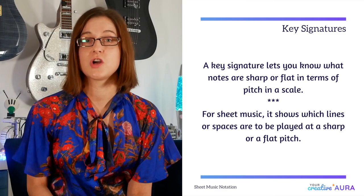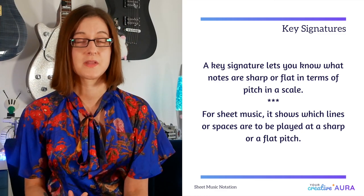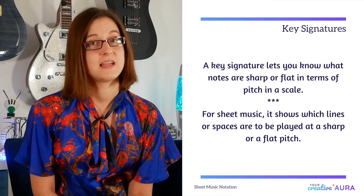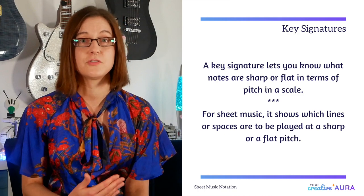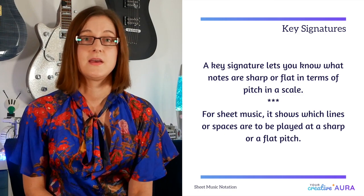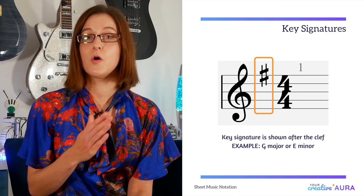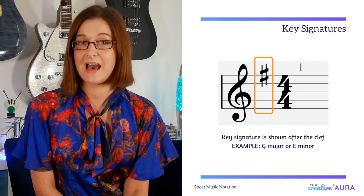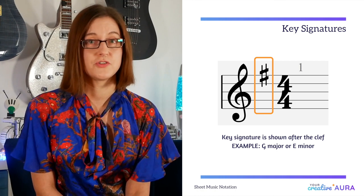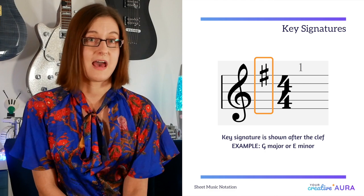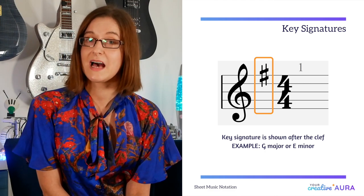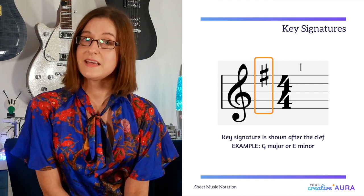Key signature. If you've already checked out my other mini course on the basics of music theory, you'll understand what a key signature is. But for those who don't, a key signature lets you know what notes are sharp or flat in a scale. On sheet music, it shows you which lines and spaces are to be played at a flat or sharp pitch. This is represented by a series of sharp or flat symbols appearing directly after the clef. Our example has one sharp on the F line, which means all F notes, regardless of octave, are to be played as a sharp — meaning the key signature is G.